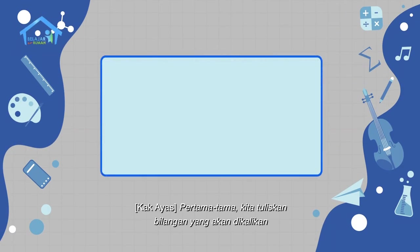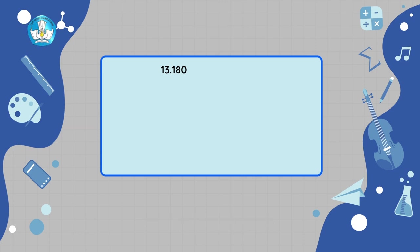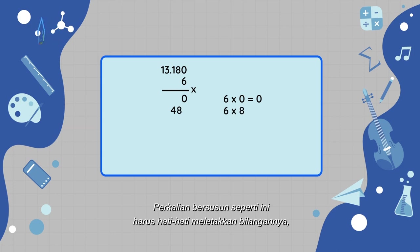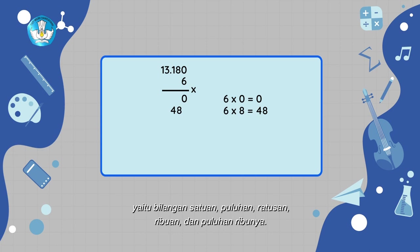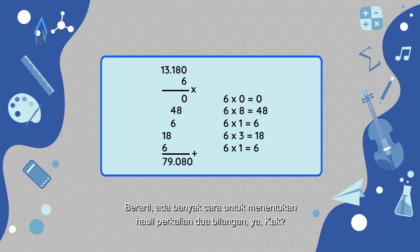Pertama-tama, kita tuliskan bilangan yang akan dikalikan secara bersusun ke bawah. Jadi kita tulis 13.180 seperti ini, kemudian di bawah angka 0 kita tuliskan 6. Ingat, kita mengalikannya dari yang paling kanan ya. Perkalian bersusun seperti ini harus berhati-hati meletakkan bilangannya, yaitu bilangan satuan, puluhan, ratusan, ribuan, dan puluhan ribunya. Wah, hasilnya sama! Berarti ada banyak cara untuk menentukan hasil perkalian dua bilangan ya Kak? Betul Radit.